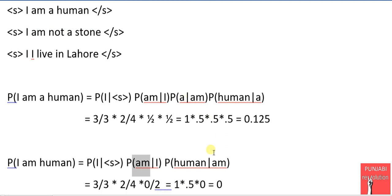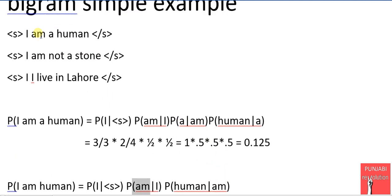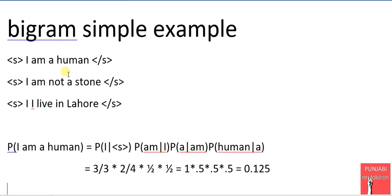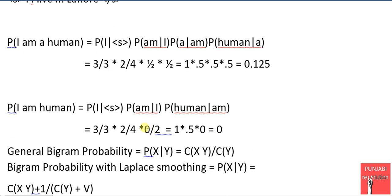So how many m's are there? There are 2 m's. So we divide by 2. And how many m human are there? m human - there is no combination of m human because there is a between m and human. So here we have 0. So the probability of this sentence becomes 0.